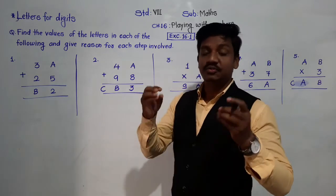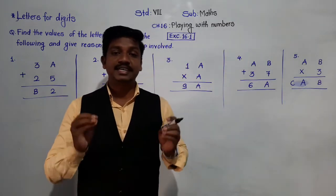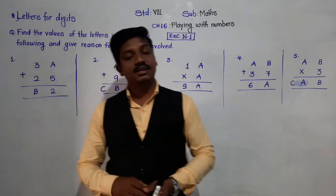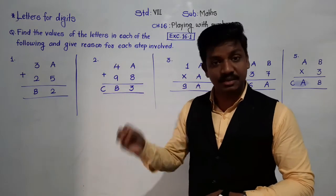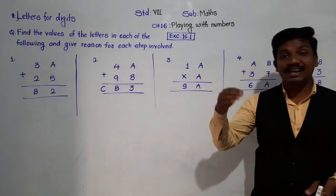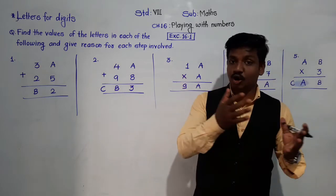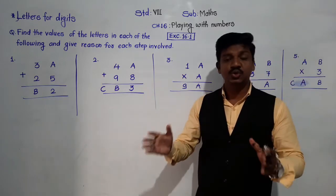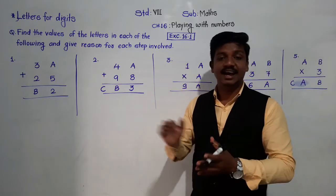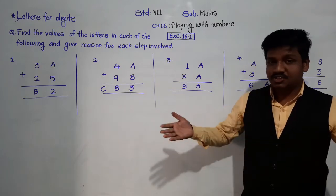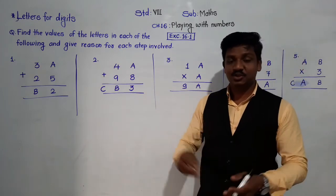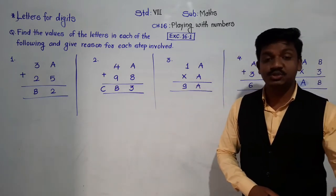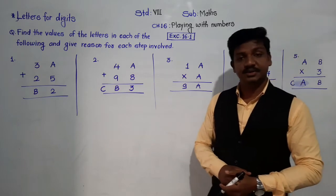Till now, we have learned different types of numbers like natural numbers, whole numbers, integers. Also, we have learned rational numbers. Along with this, we have learned operations of the numbers like addition, subtraction, multiplication and division. So we know all the ins and outs of the numbers. Now we can play with the numbers.